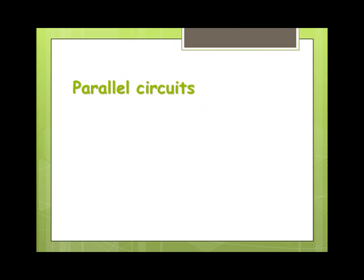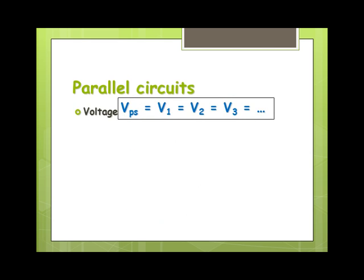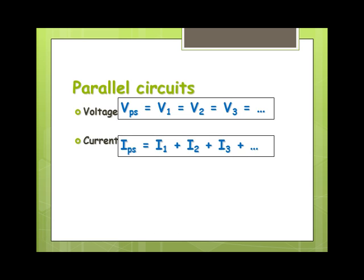In parallel circuits, though, for voltage, effectively, each of the elements is attached directly to the power supply. So, each of the elements would therefore have the same voltage as the power supply. The current, however, the current has multiple paths. So, the current through the power supply will split up between the individual elements. So, you'll have to total the current in each of the different pathways to find the current through the power supply.